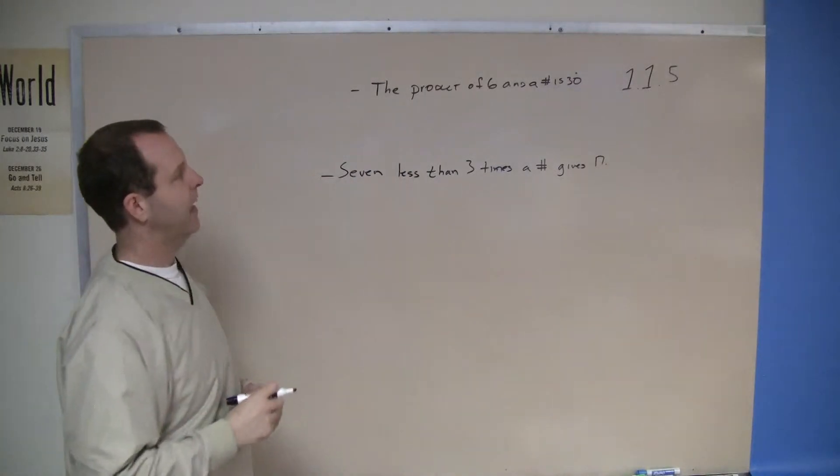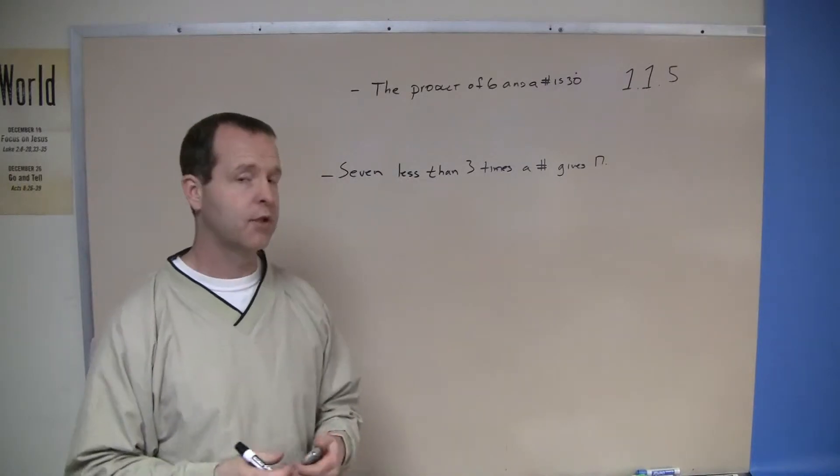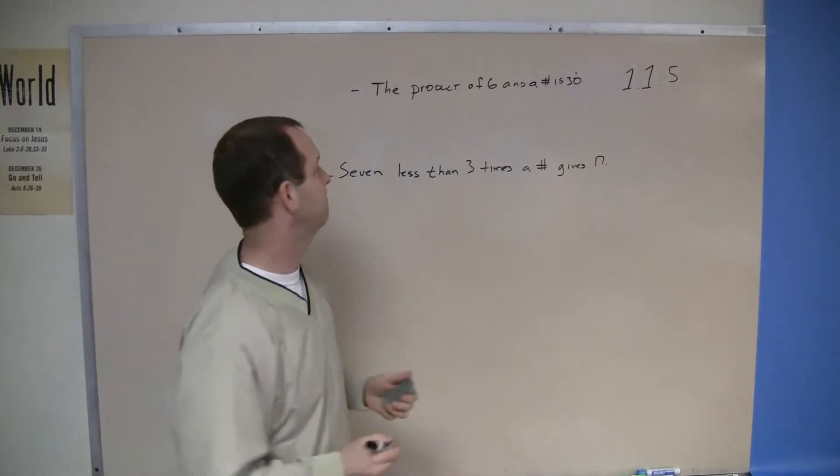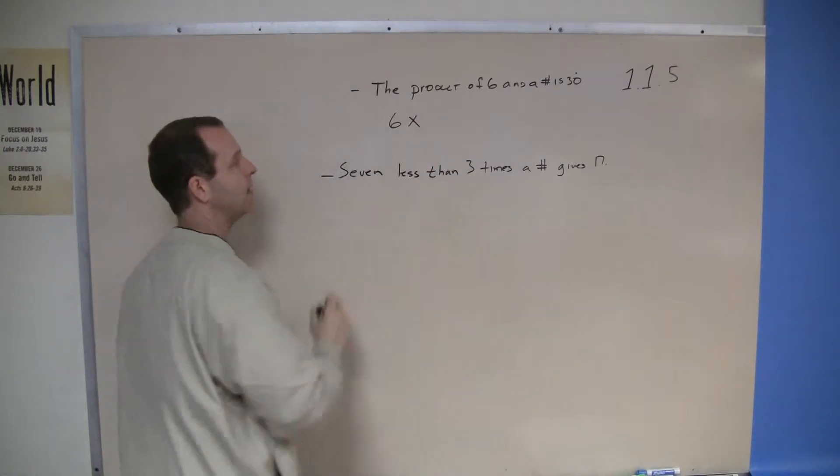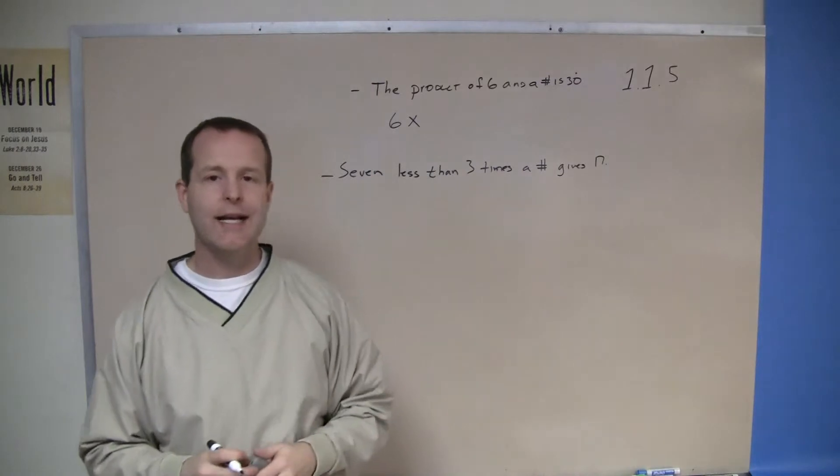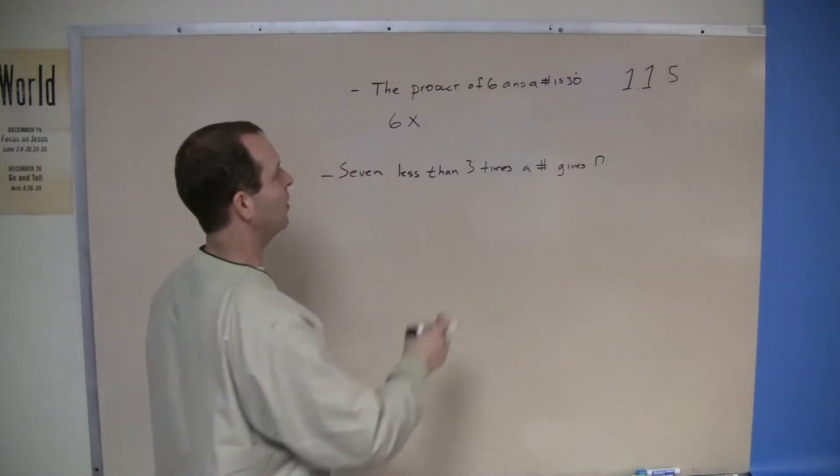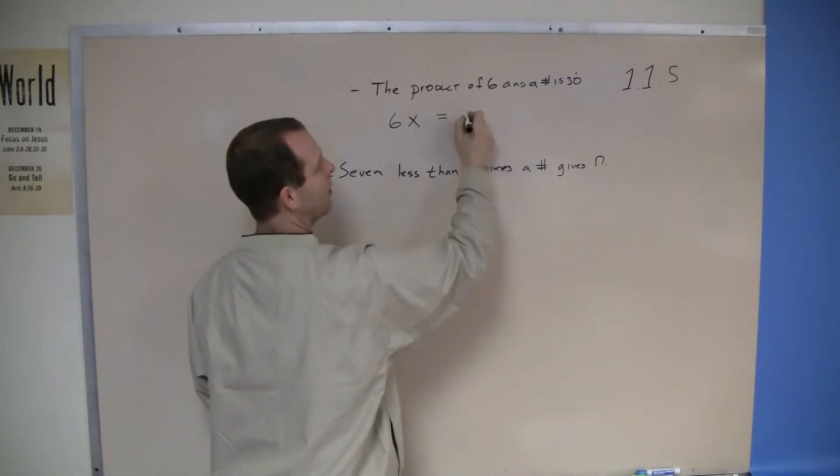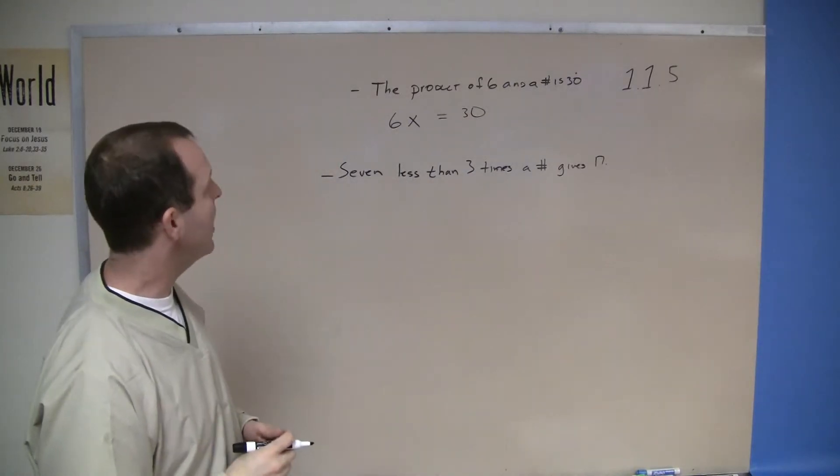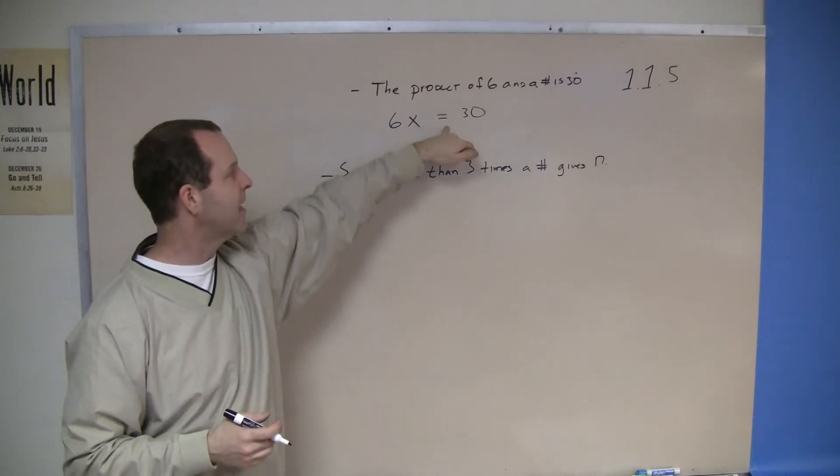Okay, the product of 6 and a number is 30. Do you remember what product meant? Product was multiplication. So what am I multiplying? I'm multiplying 6 and some number. So 6 times, and in this case, let's use a variable x, 6 times x. I'm also given a new word, which is 'is'. And 'is' always means equals. So I'm just going to rewrite is as equals 30. So what I have is the algebraic equation written from this English translation: the product of 6 and a number is 30.